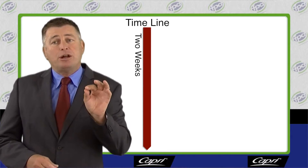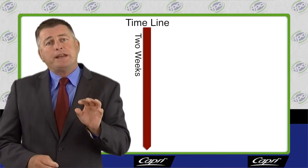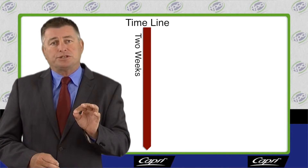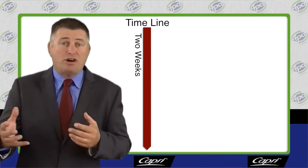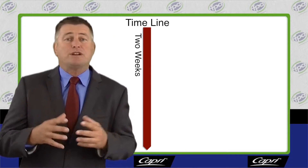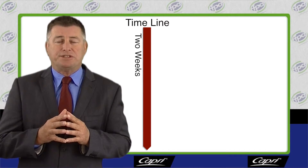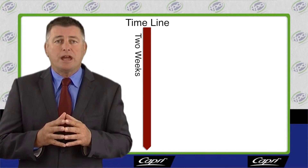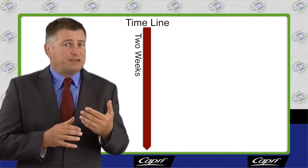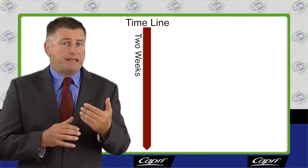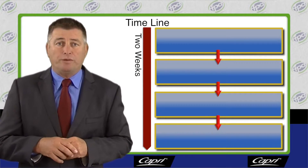Let's now look at the major steps. How many connections should we have — whether face-to-face, via Skype, telephone, or email — that are key connections within this process? You don't need to know what they are at the moment, but simply how many. Let's say in this instance, we've built four.